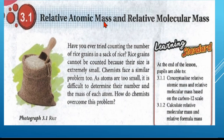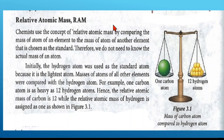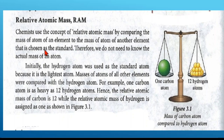So what is relative atomic mass and relative molecular mass? Chemists use the concept of relative atomic mass by comparing the mass of an atom of any element to the mass of an atom of another element chosen as standard. Therefore we do not need to know the actual mass of the atom. Relative atomic mass is the comparison of the mass of one atom of one element to the mass of another atom of another element chosen as standard.